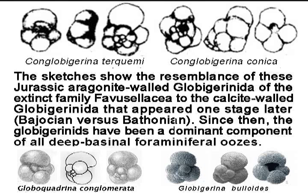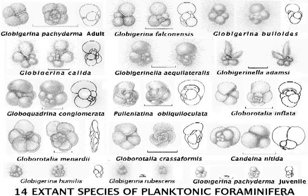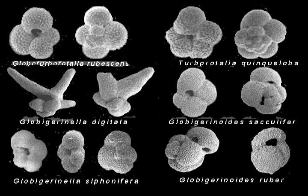The first planktonic foraminifera, the Favusellidae — a family of the Globigerinida with aragonite tests — are reported in the Bathonian Middle Jurassic of Eastern Europe. They became extinct in mid-Cretaceous times. Planktonic foraminifera with calcite tests appear just after the first occurrence of the aragonitic forms and provide nearly global biostratigraphic information for the remainder of the Mesozoic and throughout the Cenozoic era.